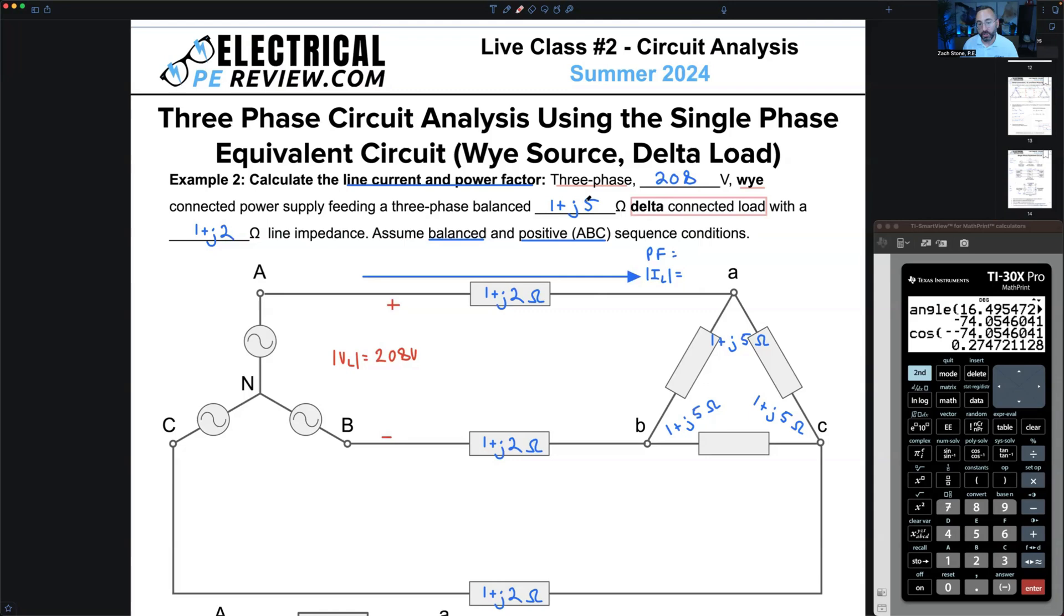My one plus J5 ohms, it's not from A to neutral, B to neutral, C to neutral. Now my one plus J5 is from A to B, that's A phase. From B to C, that's B phase. From C back to A, that's the C phase of our delta connected load.